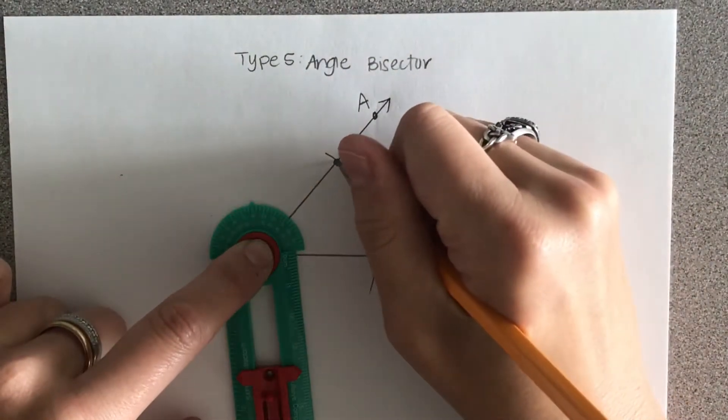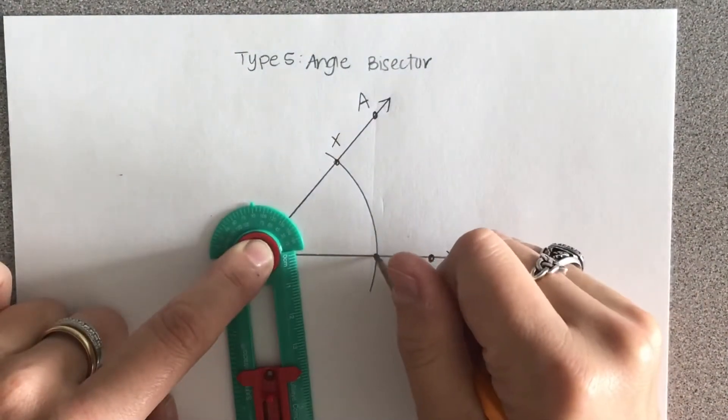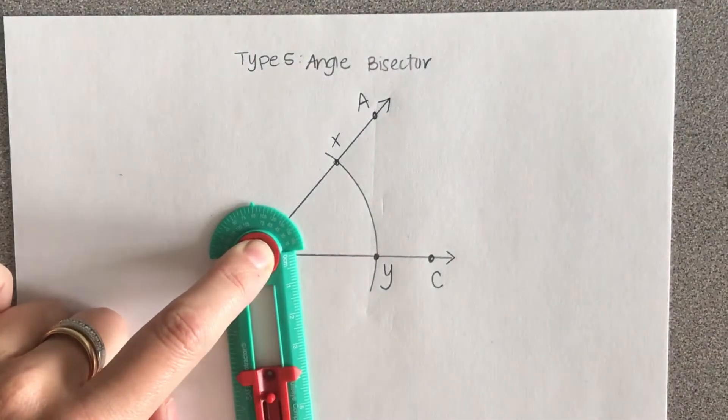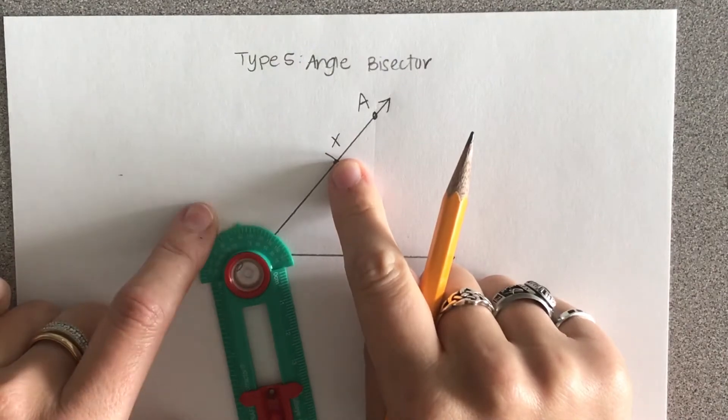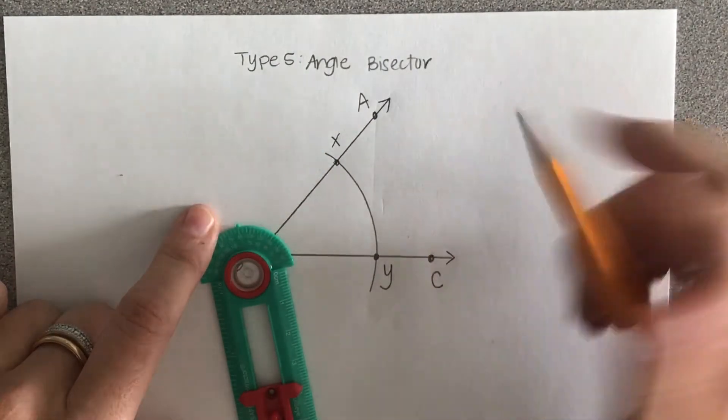I'm going to name my top point point X and my bottom point point Y. Now I'm going to take my compass, put it on point X, and draw an arc on the interior of the angle.